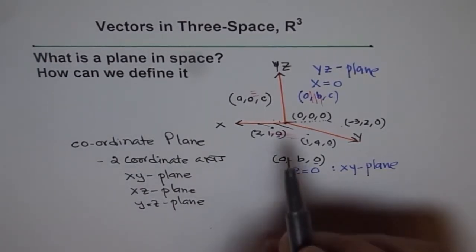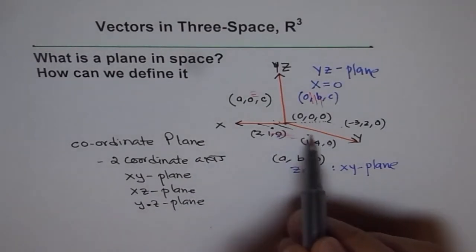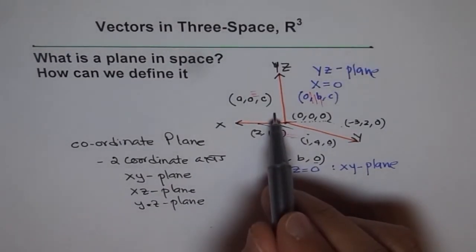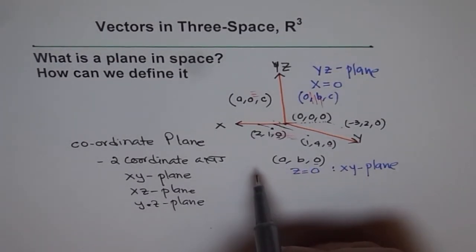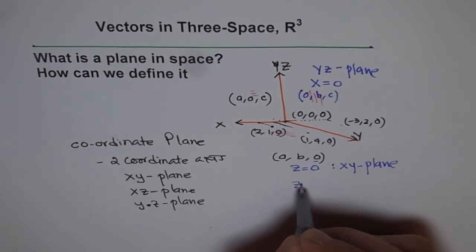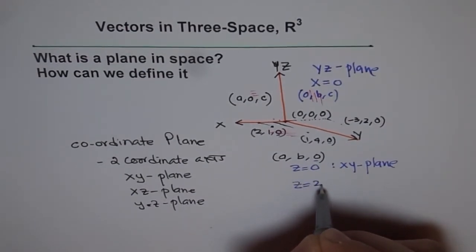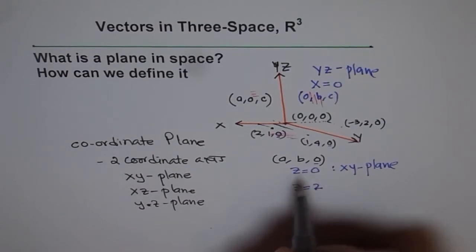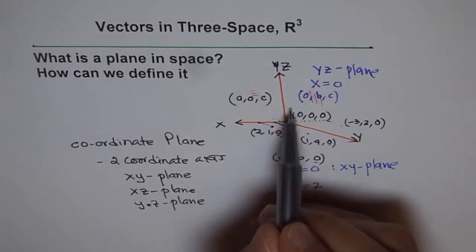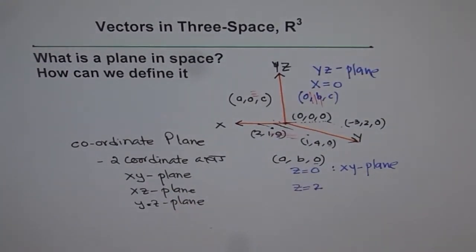For example, if I have a plane parallel to XY plane and it is two units higher than the equation of that will be? Think about it. How about Z equals to two? Z equals to two will represent a plane which is two units higher than XY but parallel to XY plane. Kind of here. Do you understand? So that is how we understand planes in three space.